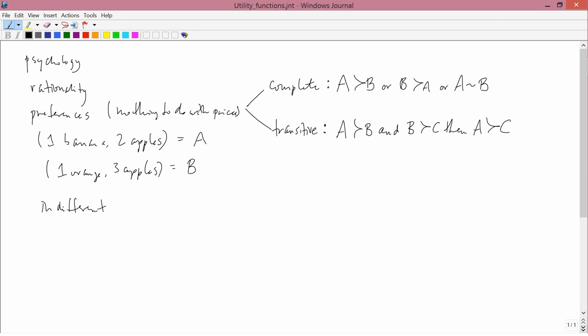However, if one has a longer chain, A is preferred to B, B is preferred to C, C is preferred to D, D is preferred to E, and then you ask the consumer between A and E, sometimes you get reversals, particularly if the bundles are fairly complicated.